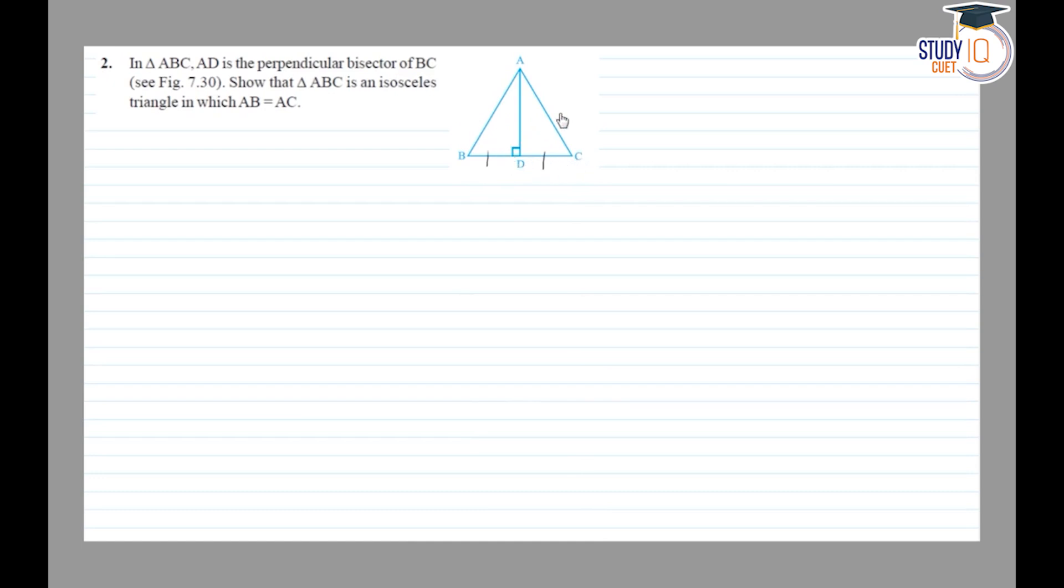AB is equal to AC and I can say ABC is an isosceles triangle. So now considering triangle ADB and triangle ADC.